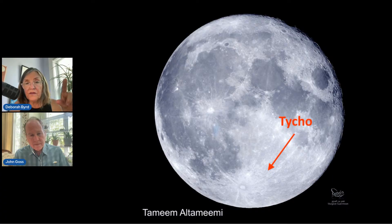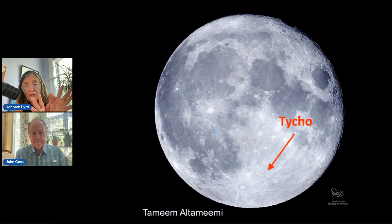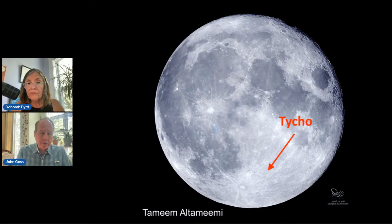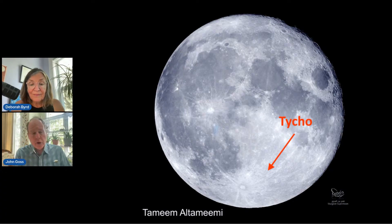An arrow is now pointing to Tycho, and you can see it right at the bottom of the moon in this image with those rays extending outward. The rays are even brighter than the surrounding area — which we call the lunar highlands because it is a little higher than the dark maria plains around it — but the rays on top are quite a bit brighter still. You can make out these streamers coming from the surface with binoculars really easily.